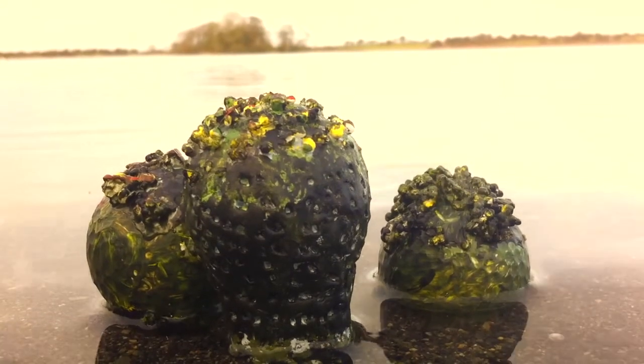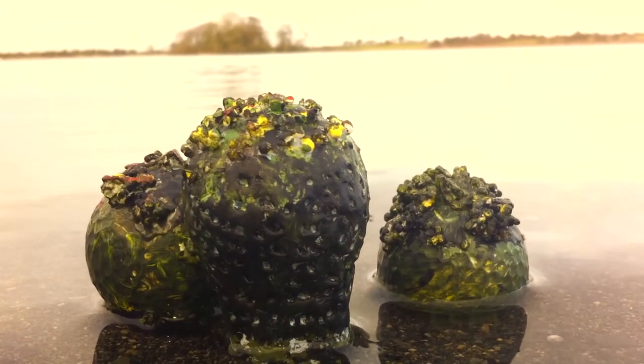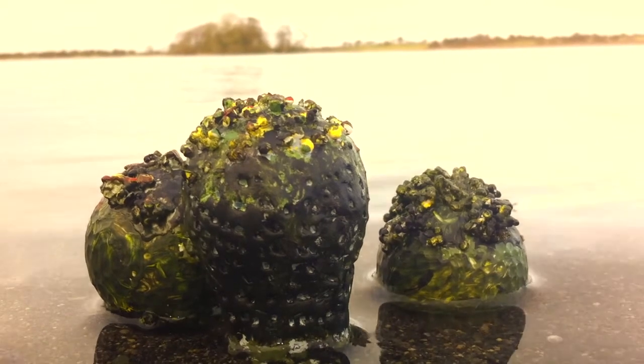Cyanobacteria occur in stromatolites and are one of the first colonizers of Earth. They produce oxygen via photosynthesis. Before the Great Oxidation event, cyanobacteria were producing oxygen that would have been removed quickly from the atmosphere by weathering of reduced minerals, notably iron.